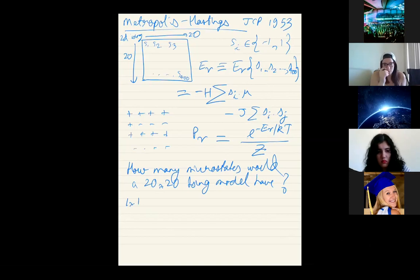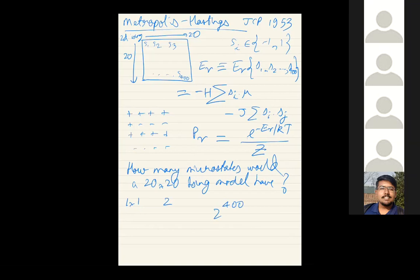If you try brute force and sum up the partition function by going over all microstates, even for a 20×20 Ising model it will take more than the age of the universe. So we want to be smarter. In order to sum Z = Σ_μ e^(−E_μ/kT), with 2^400 terms, if you do it exactly it would be impossible. But most of these configurations have very large energy and won't contribute — in a canonical ensemble, as N→∞, energy fluctuations die and configurations far from the mean energy become negligible.